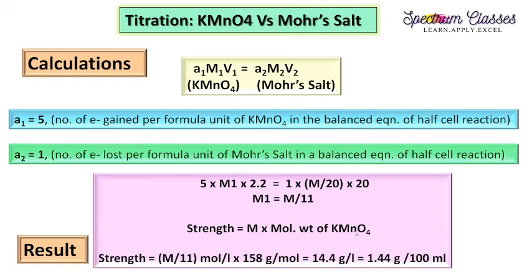To determine the strength: strength equals molarity times molecular weight of KMnO4. Since we are going to calculate, we have the molecular weight of KMnO4 which is 158 g/mol. So strength equals (M by 11) times 158 g/mol. Mole cancels out, it will be 14.4 grams per liter. And this is 1 liter actually. So if I just want to calculate in 100 ml, it would be 1.44 grams KMnO4 dissolved in 100 ml. Whereas I have dissolved 1.58 grams in 100 ml.